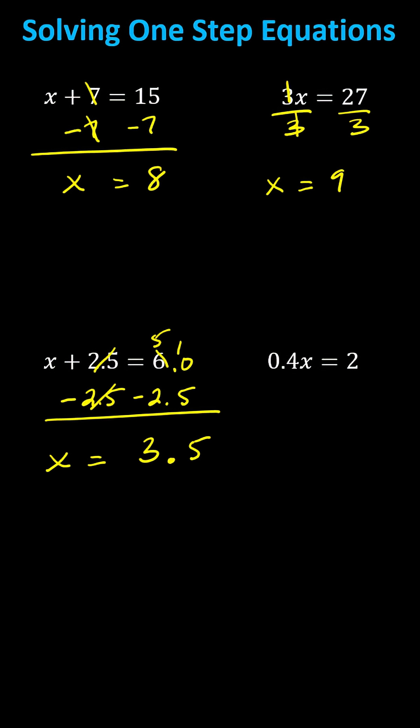For the last example, we have 0.4x equals two, or four tenths x equals two. Because we have multiplication on the left, we need to divide both sides by 0.4 to solve for x.